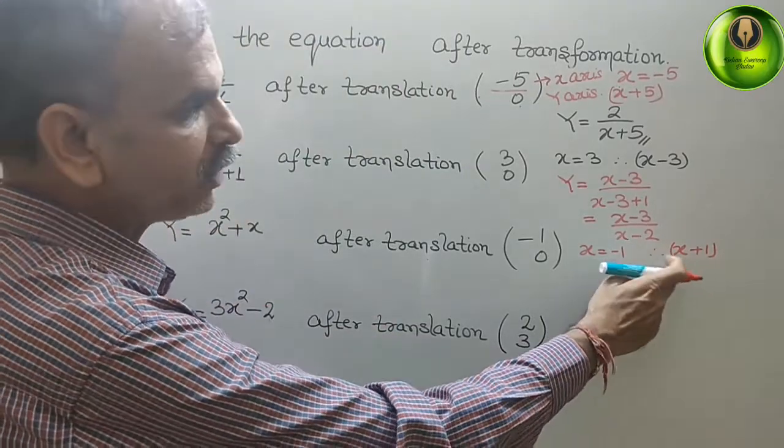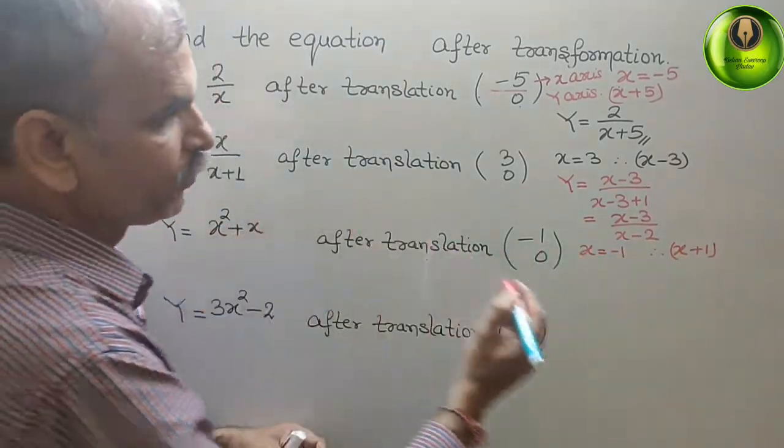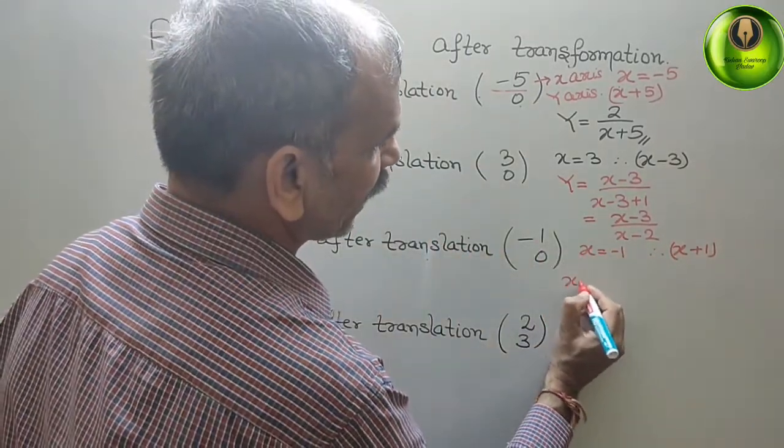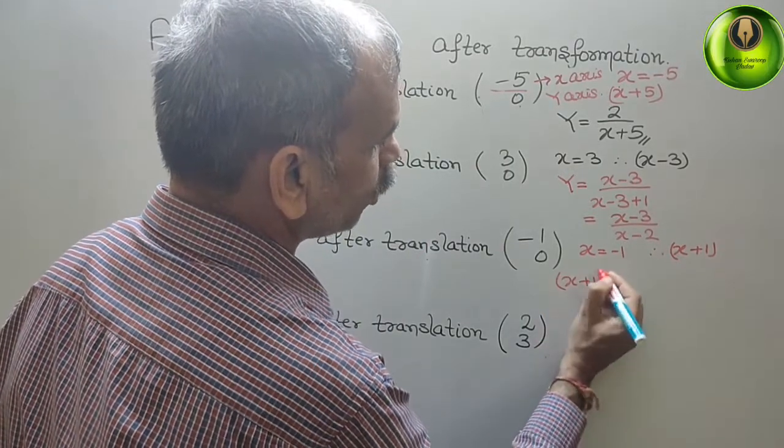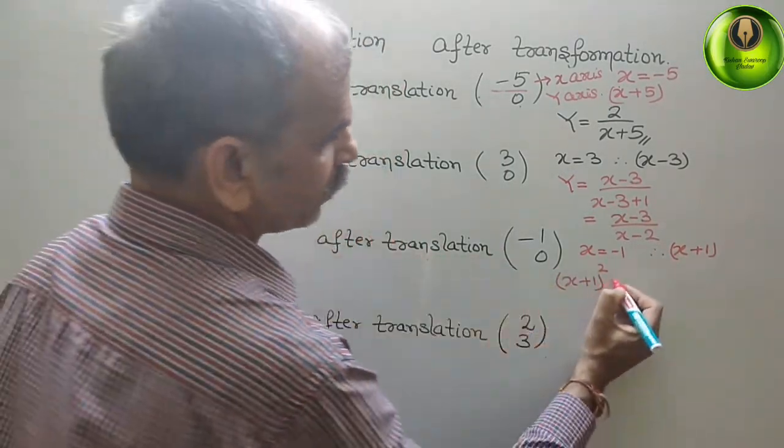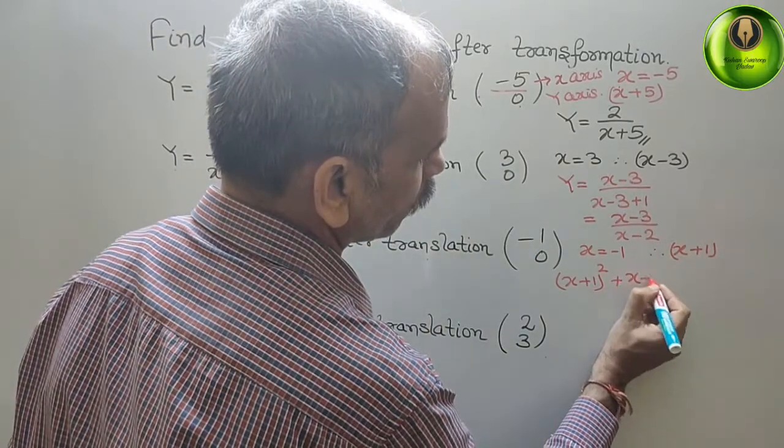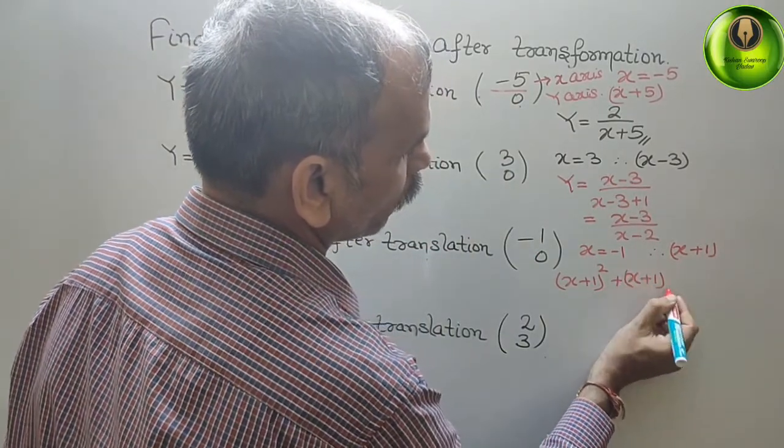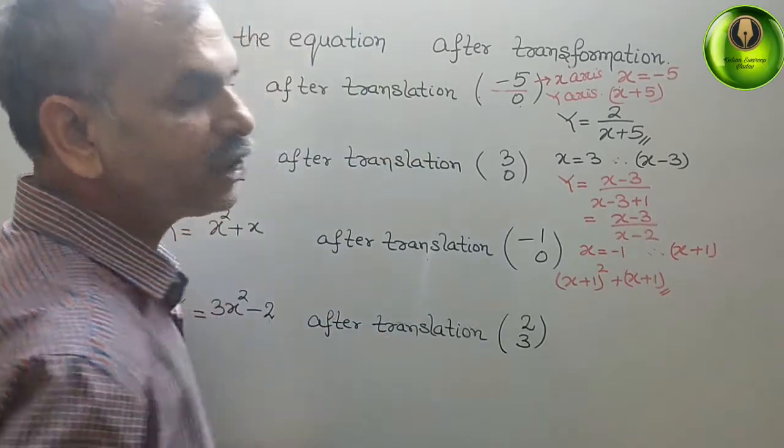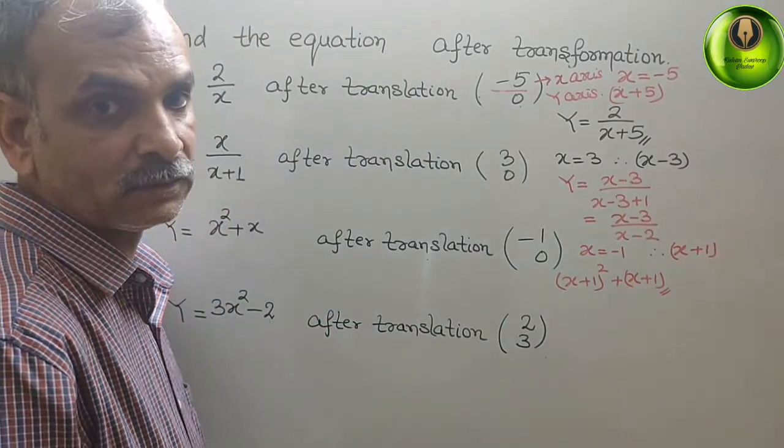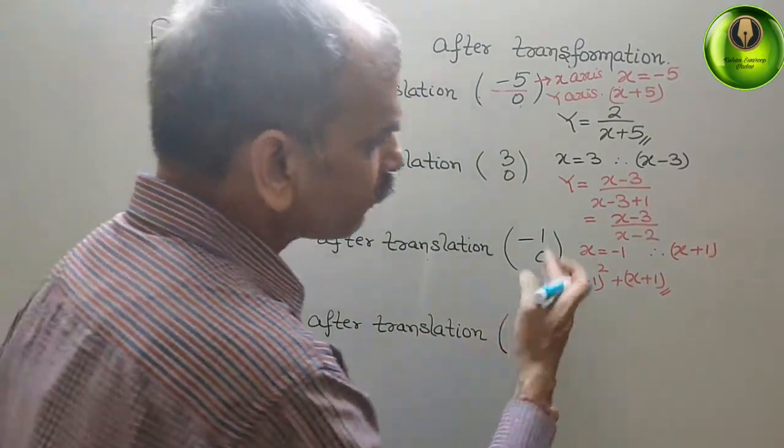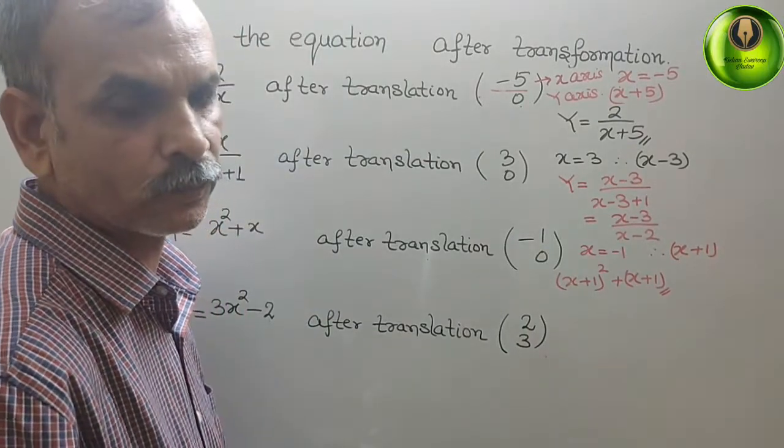Just put this value in place of x. What we will get? Then we will get x plus 1 whole squared plus x plus 1. This is the translation for that. Or we can solve it also.